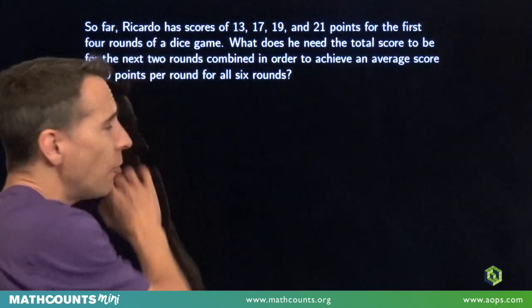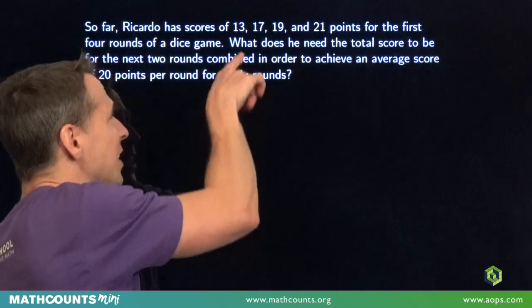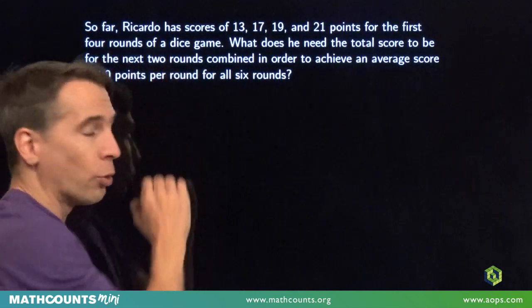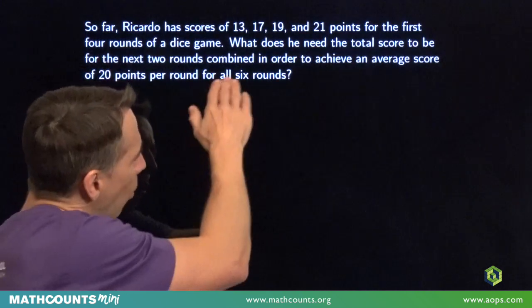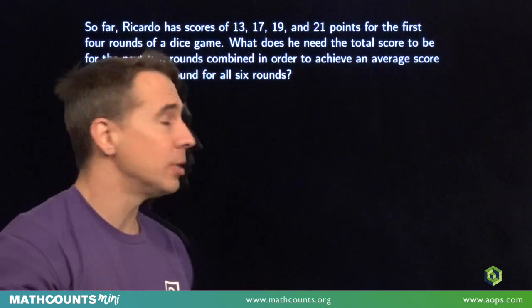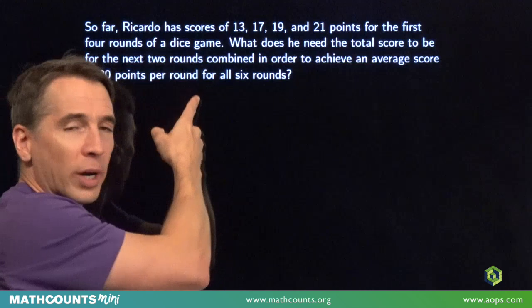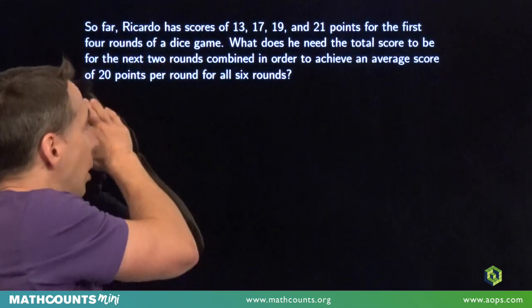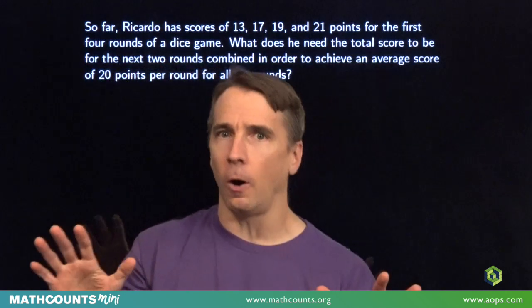First problem. So far, Ricardo has scores of 13, 17, 19, and 21 points for the first four rounds of a dice game. What does he need the total score to be for the next two rounds combined in order to achieve an average score of 20 points per round for all six rounds?